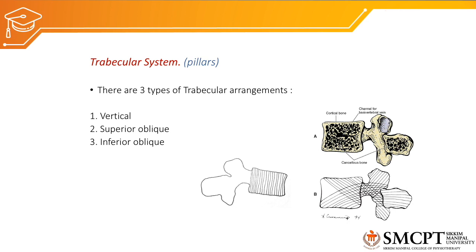The trabecular system, already discussed for the cervical vertebra, remains the same for all vertebral spine levels. It has three types of trabecular arrangements: vertical, superior oblique, and inferior oblique. The vertical trabecular system resists compressive force, whereas the superior and inferior oblique arrangements resist torsion and shearing forces.